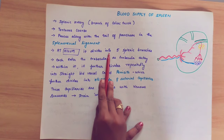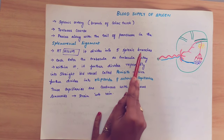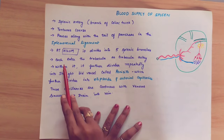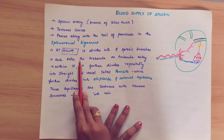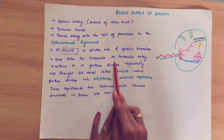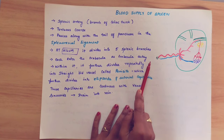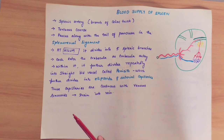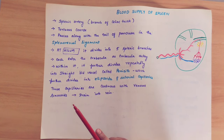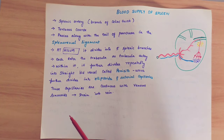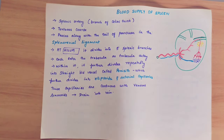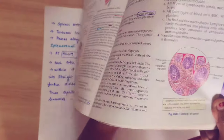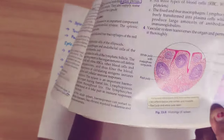At the hilum, the splenic artery divides into five splenic branches, each entering the trabeculae as trabeculae arteries. Before understanding how the splenic artery divides, you need to know the histology of the spleen. We will see the diagram for this.